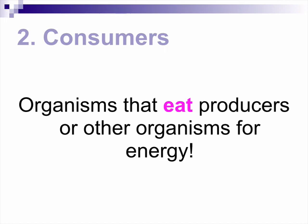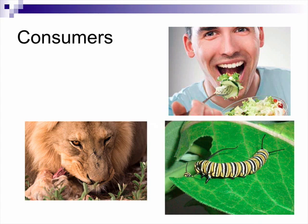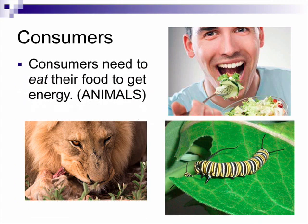Now let's talk about consumers. Consumers are organisms that eat producers or other organisms for energy. For example, we don't make our own energy — we don't work with the sun. Instead, we eat plants and animals. Here are some examples: someone eating a salad, the monarch butterfly caterpillar eating a plant, and a lion eating meat. Consumers need to eat their food to get their energy.